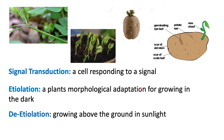If the potato was underground and it was growing these shoots — these stems — the stems would begin to elongate and reach a point where they would be above the soil, exposed to sunlight. Etiolation is growing in the dark, while once you're exposed to sunlight and above ground, that's de-etiolation.